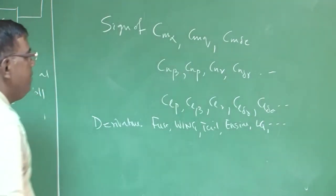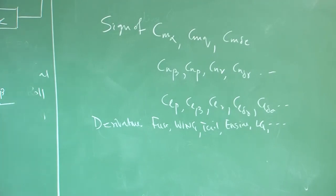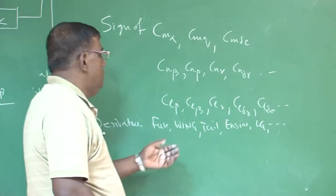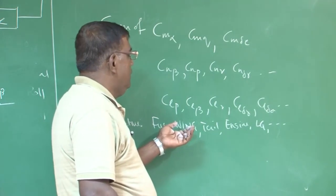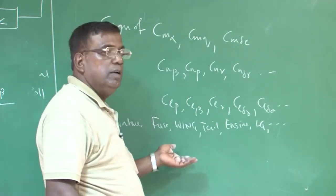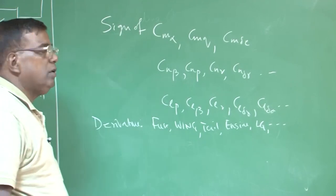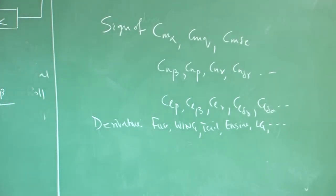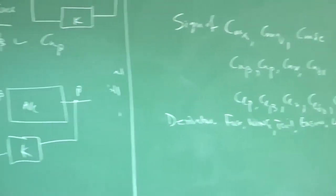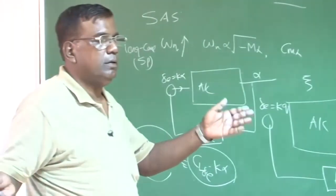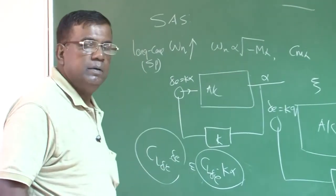You will also notice that few of the derivatives will have huge contribution from a particular component. For example, C_m_alpha, the major component which will contribute will be the tail, right. C_Lp, major contributor will be the wing, okay.